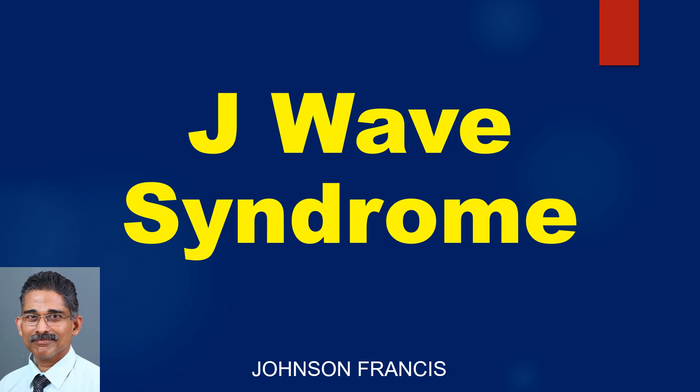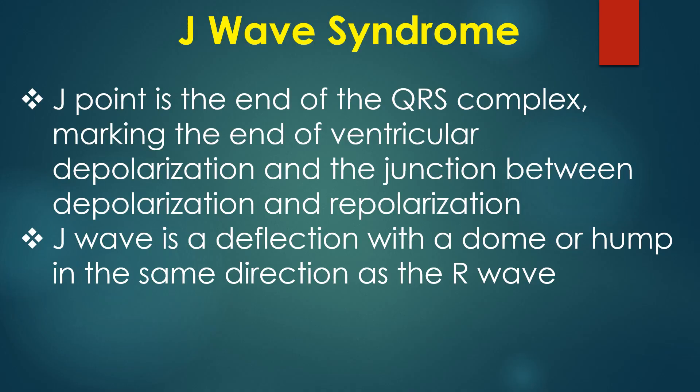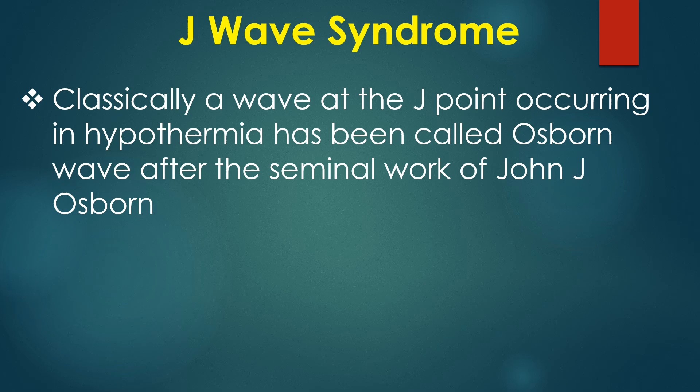Discussion on J wave syndrome. The J point is the end of the QRS complex, marking the end of ventricular depolarization and the junction between depolarization and repolarization. The J wave is a deflection with a dome or hump in the same direction as the R wave. Classically, a wave at the J point occurring in hypothermia has been called the Osborne wave, after the seminal work of John J. Osborne.